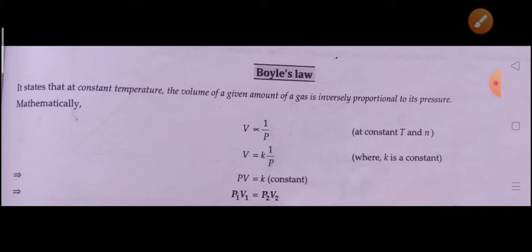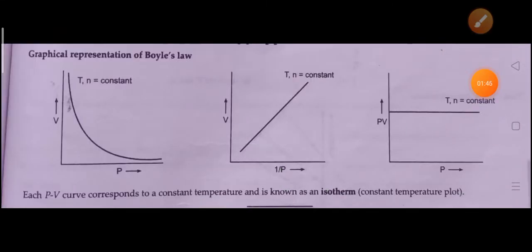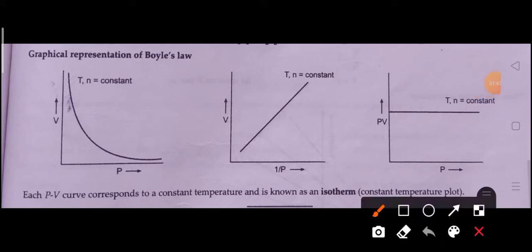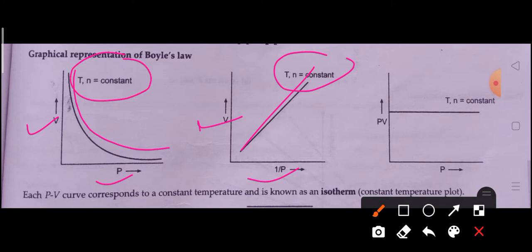Now let's see the graphical representation of Boyle's law. When you plot the graph between V and P, it is a hyperbola. When you plot the graph between V and 1/P, it will be a straight line at constant T and n.